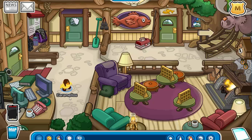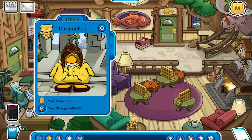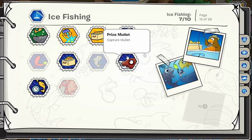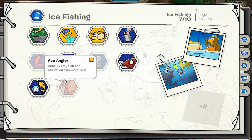And I think you get a stamp for that, hold on, let me check. All right, yeah, there is a prize. Prize mullet is capture the mullet, wait, what's this, hook 15 gray fish and the mullet with no worm lost, ooh, that's hard, I'll try that, well, actually, it's extreme.